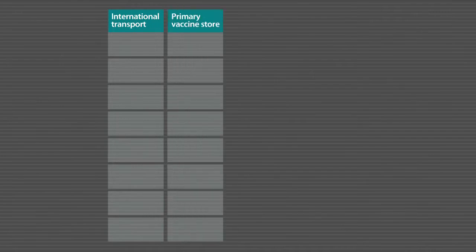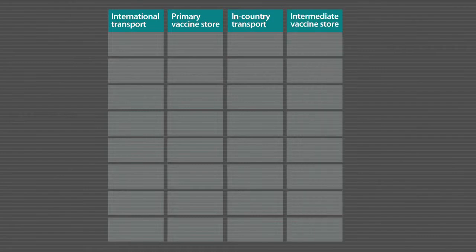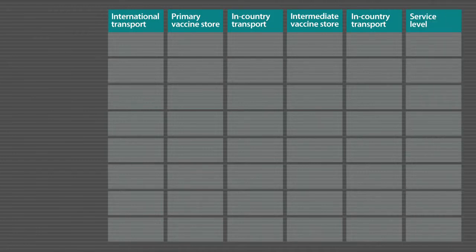In a typical system, we will have a six-level supply chain, starting with the international transport bringing the vaccines to the country, storing them in the primary vaccine store, transporting them from the primary vaccine store to a lower level — an intermediate vaccine store — and transporting vaccines from the intermediate vaccine store to the service level, where the vaccine will be administered to patients.